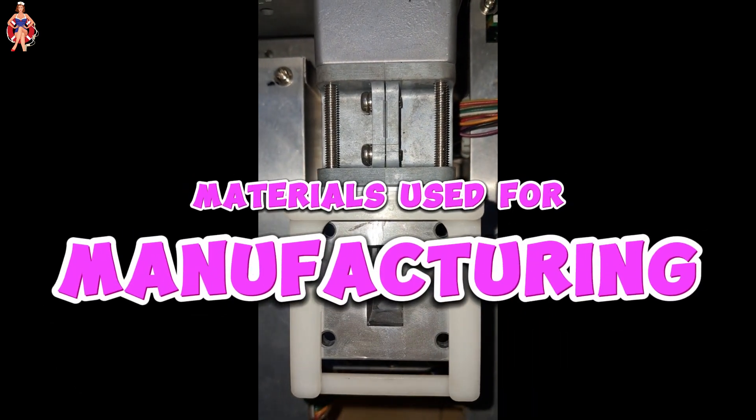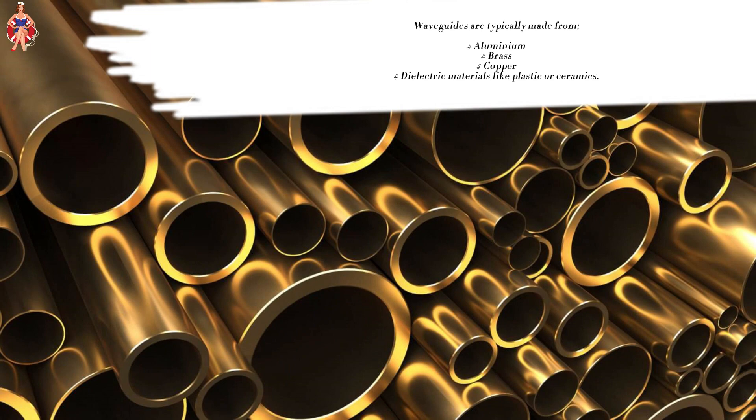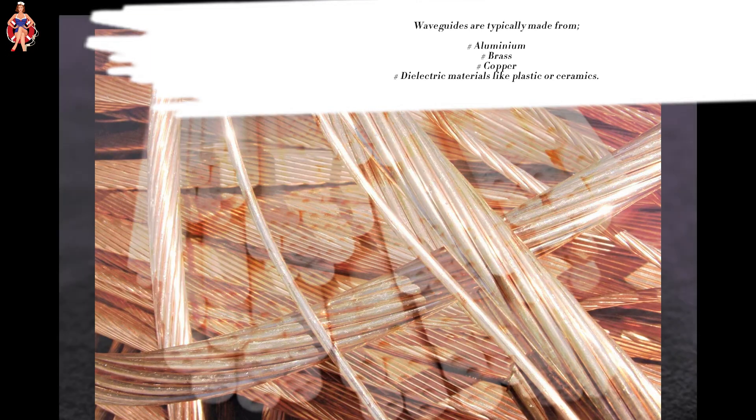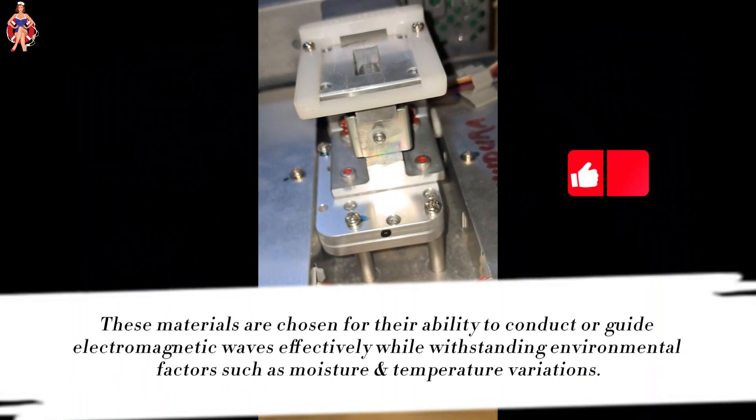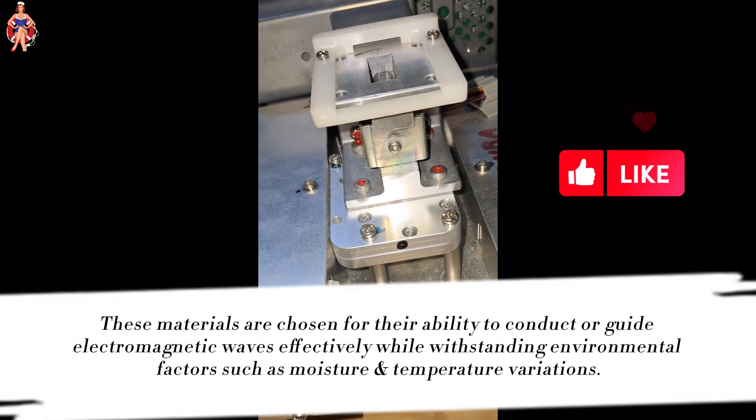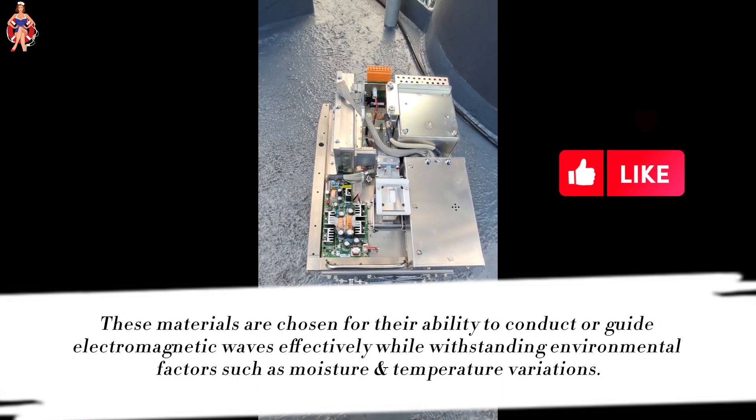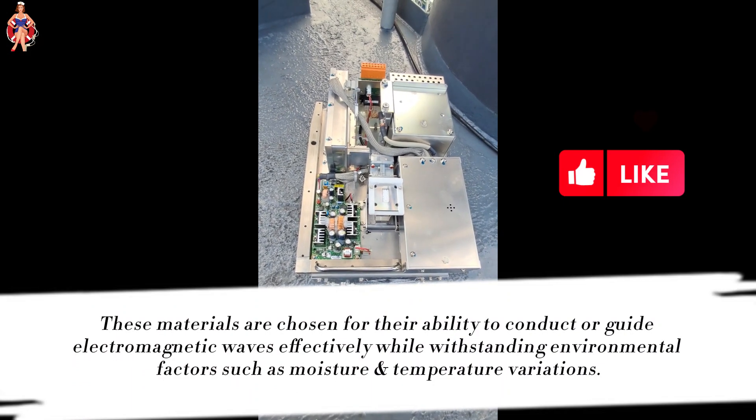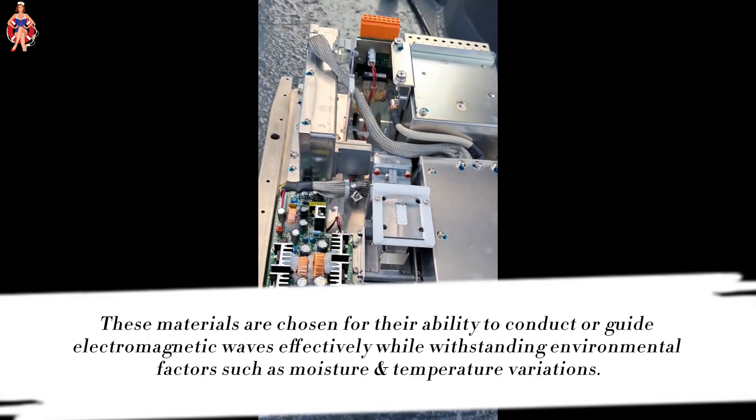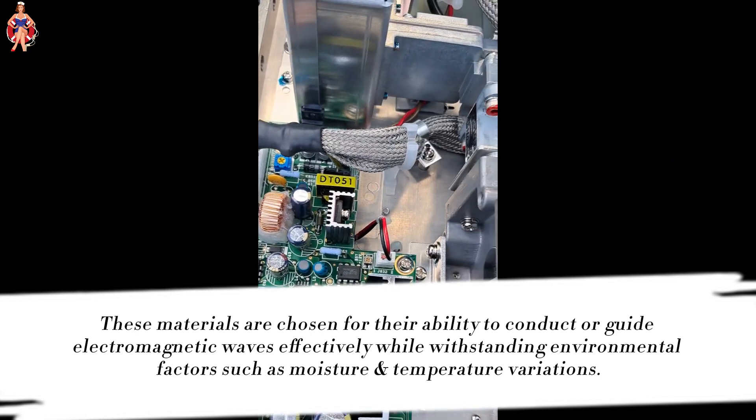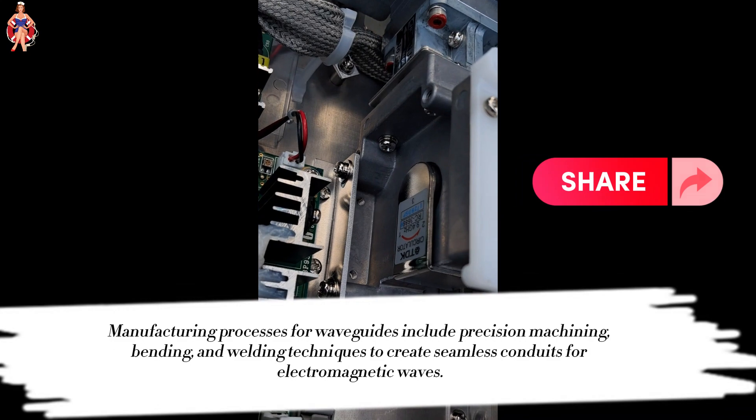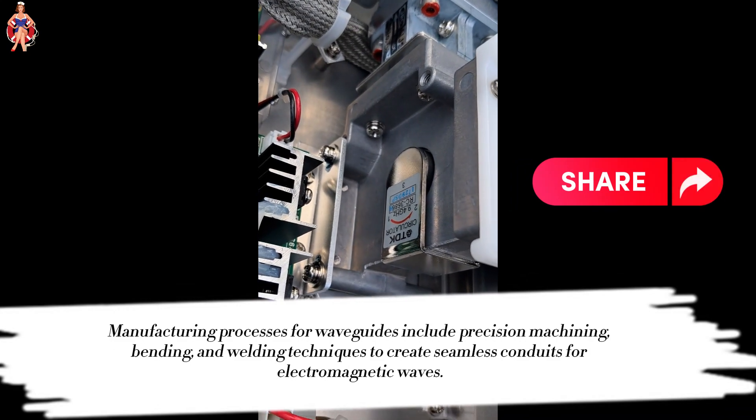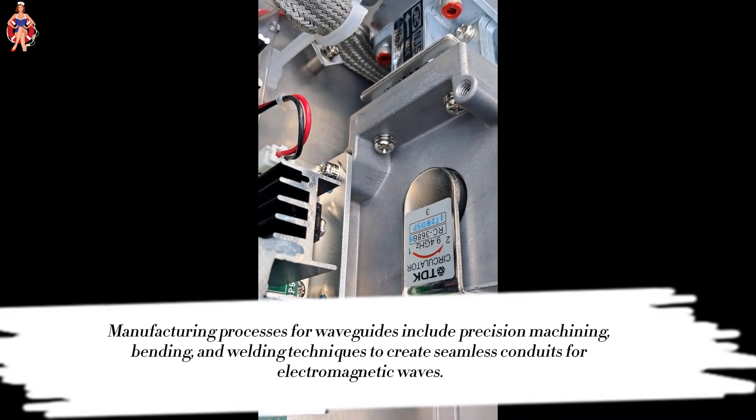Materials used for manufacturing: Waveguides are typically made from aluminum, brass, copper, or dielectric materials like plastic or ceramics. These materials are chosen for their ability to conduct or guide electromagnetic waves effectively while withstanding environmental factors such as moisture and temperature variations. Manufacturing processes for waveguides include precision machining, bending, and welding techniques to create seamless conduits for electromagnetic waves. Dielectric waveguides may involve molding or casting processes for shaping non-metallic materials.